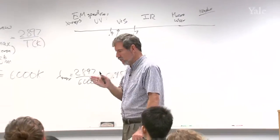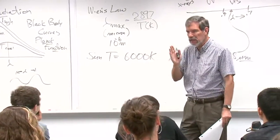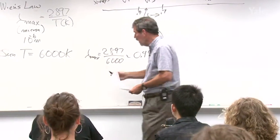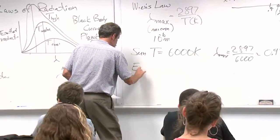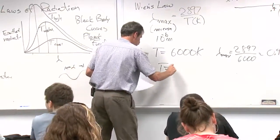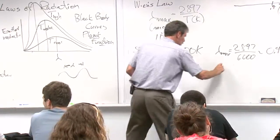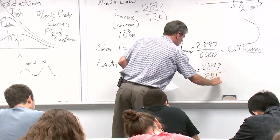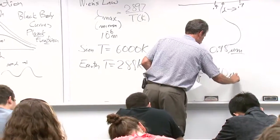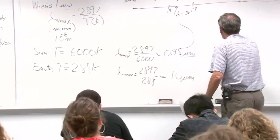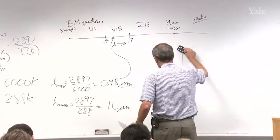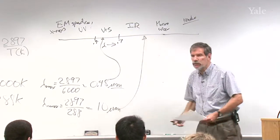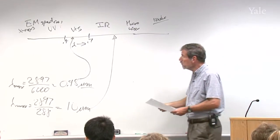Is it just an accident that the Sun's peak radiation happens to fall in the human range of eye sensitivity? Let's do the same thing for Earth. Typical temperature for Earth is about 288 Kelvin. Lambda max then is 2897 over 288 — that's approximately 10 microns. That is way out in the infrared part of the spectrum — the so-called thermal infrared. This is the surface temperature of the Earth, 288 Kelvin — 15 degrees Celsius, like the temperature in this room.